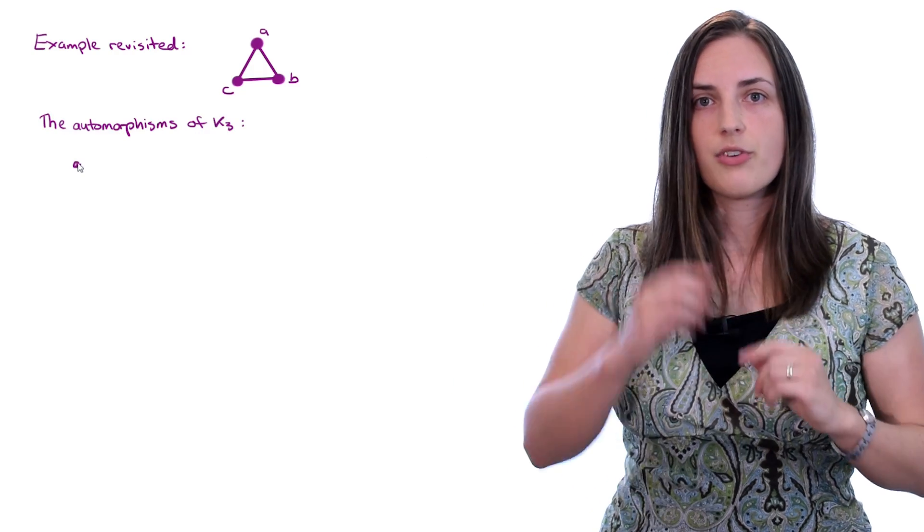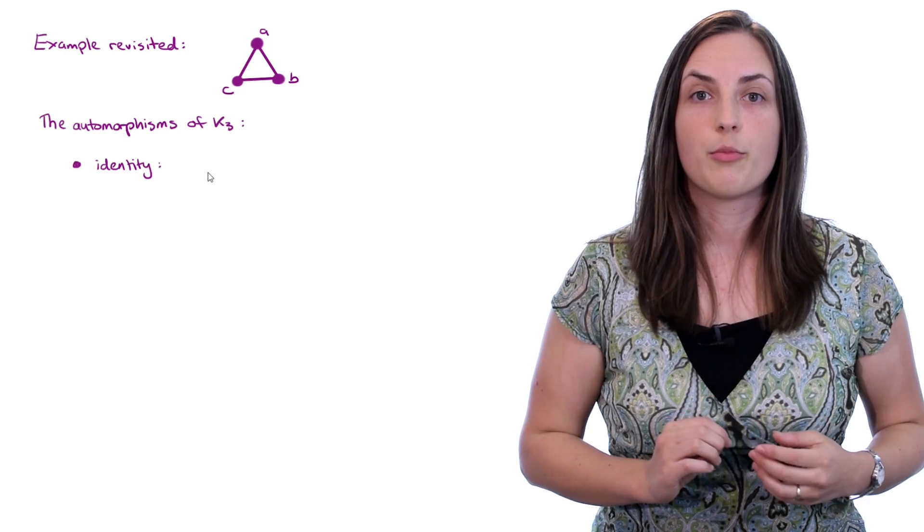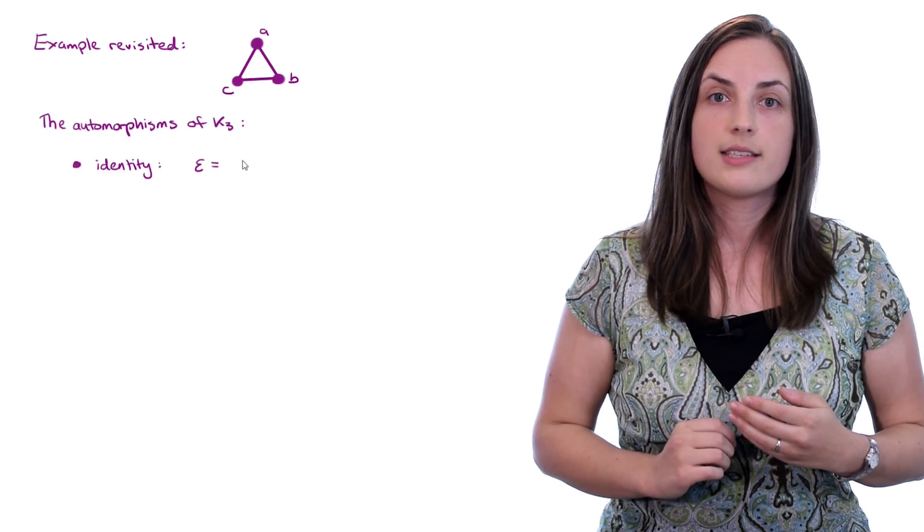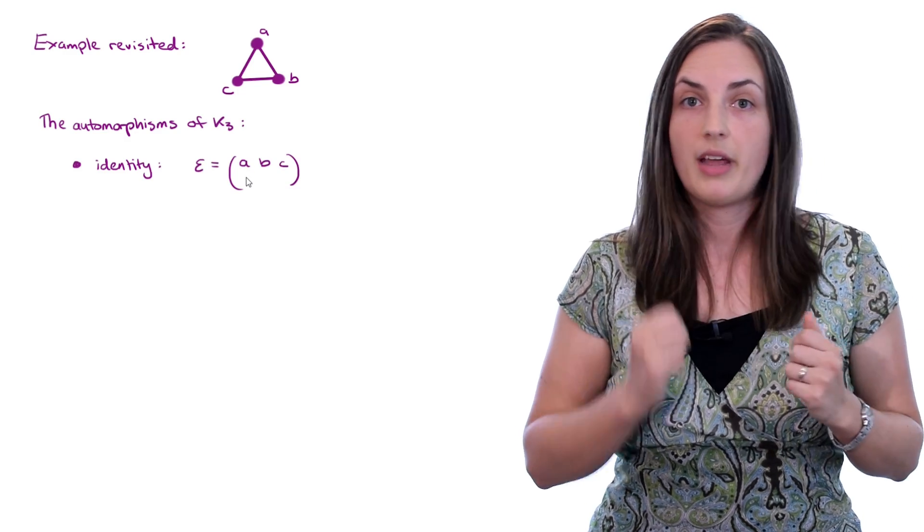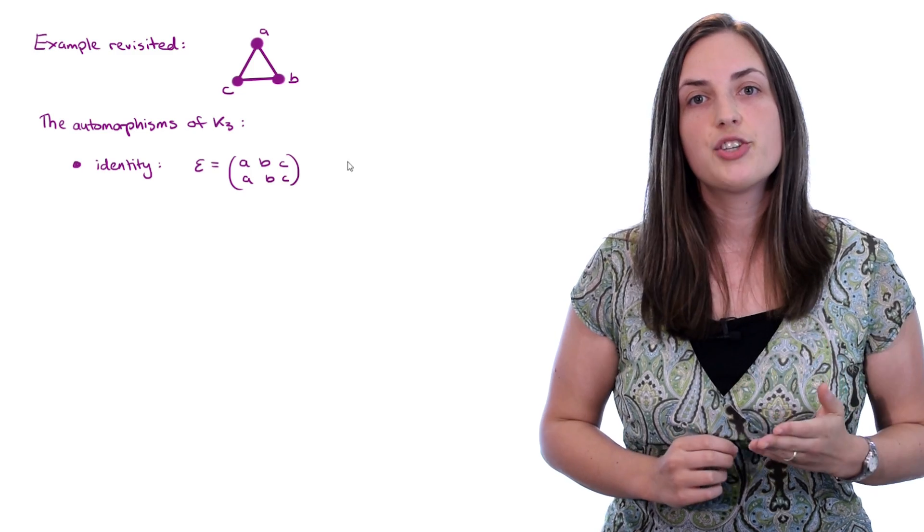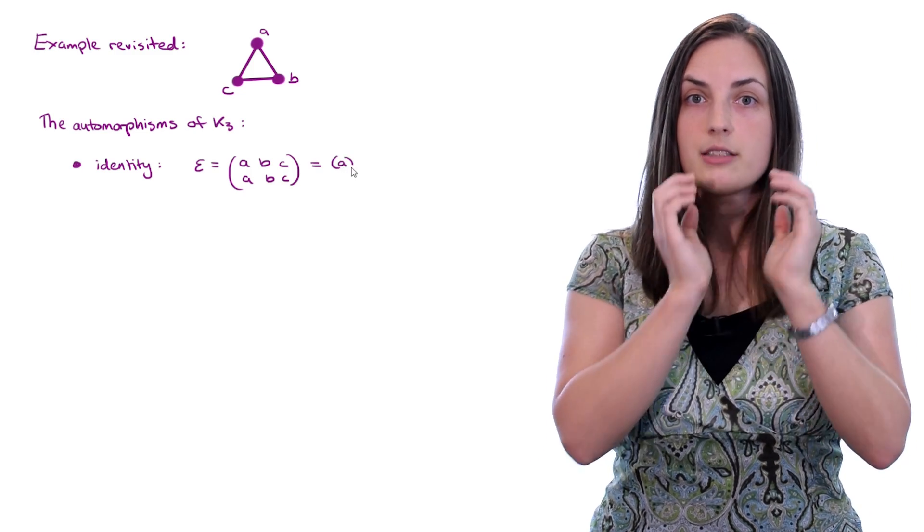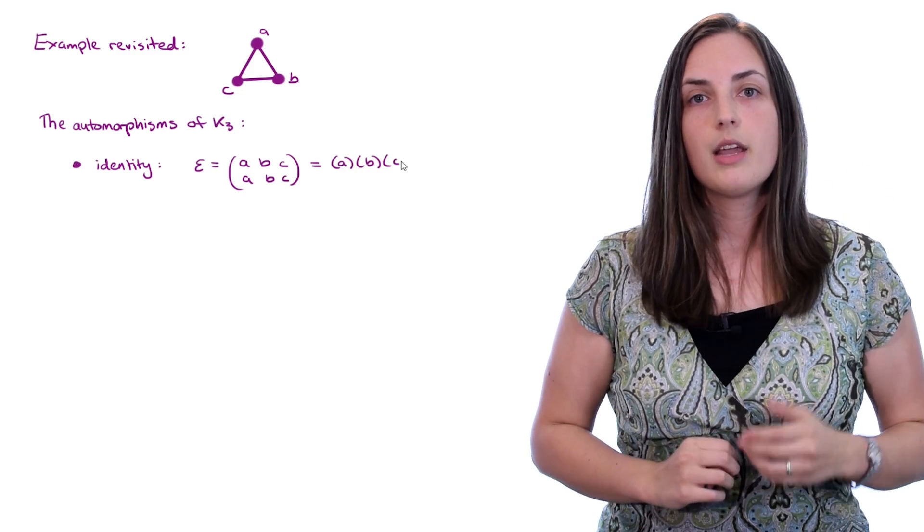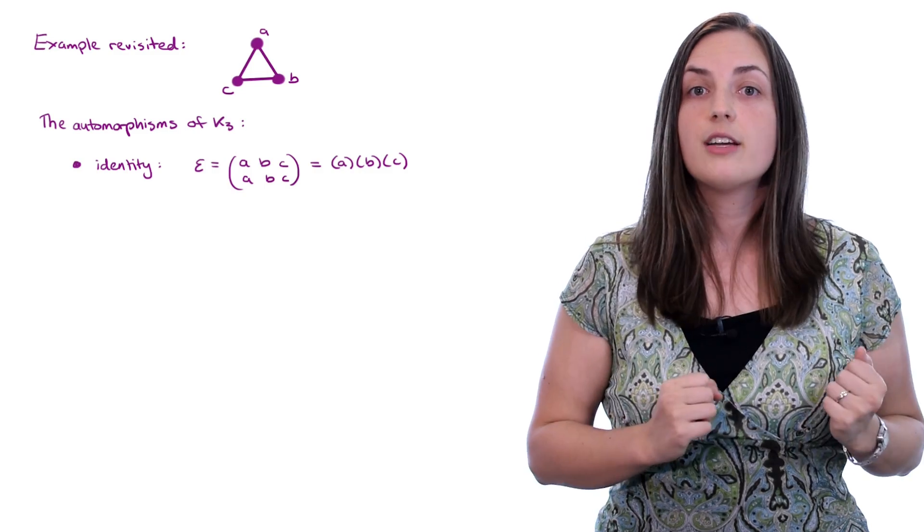Let's revisit our example, and we'll take a look at all of the automorphisms of this graph, which is K3. So first of all, the identity is always an automorphism. The identity in this case just maps A, B, and C to A, B, and C. The other notation for that is just A in brackets, B in brackets, C in brackets. That tells you that A, B, and C are all fixed.